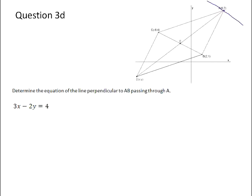So there is a new line on the graph that's not shown, and it passes through A and is perpendicular to AB. Now, in question A, you were given the equation of AB as 3X minus 2Y equals 4.